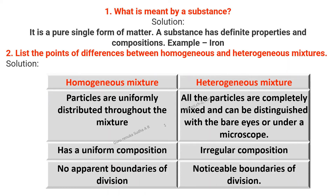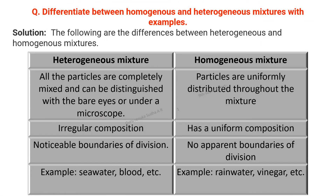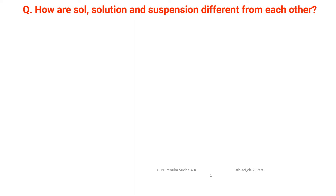The third question also asks about the difference between homogeneous and heterogeneous mixtures, but with examples. Examples of heterogeneous mixtures are sea water and blood. Examples of homogeneous mixtures are brine water and vinegar.